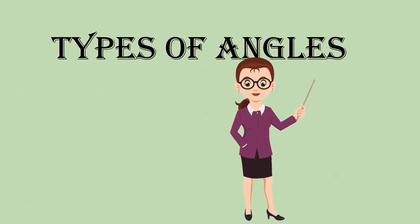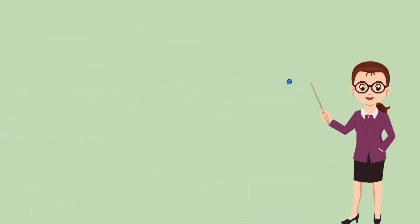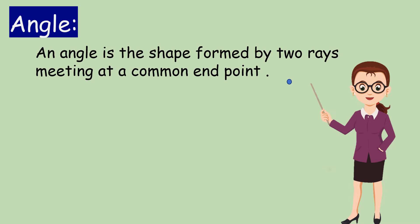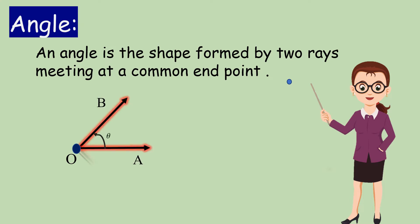Types of Angles. Before going to the topic, what is an angle? An angle is the shape formed by two rays meeting at a common end point. In the given figure, rays OA and OB form an angle. OA and OB are called the arms of the angle, and the common initial point O is called the vertex.